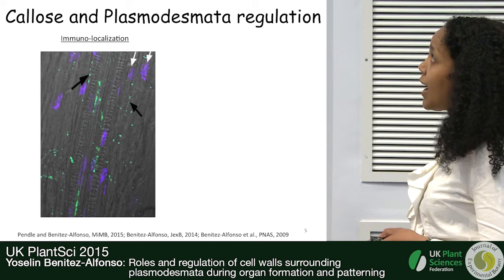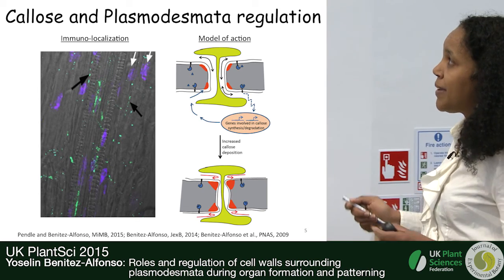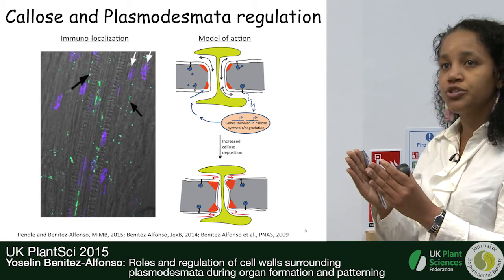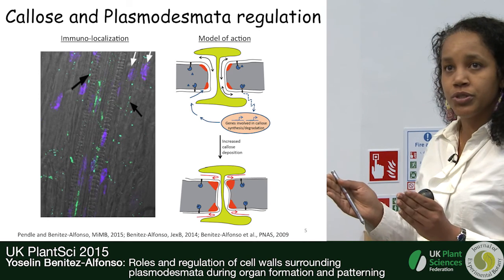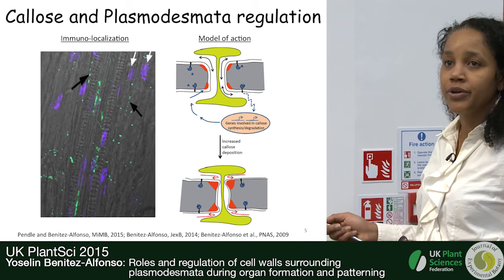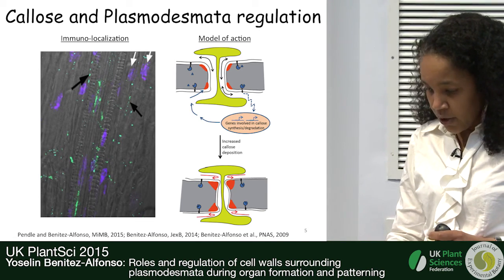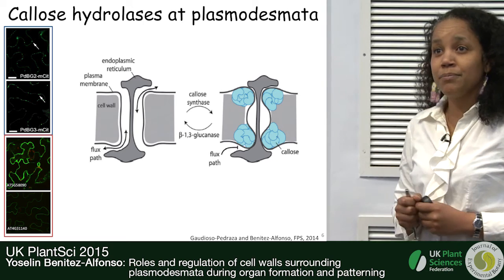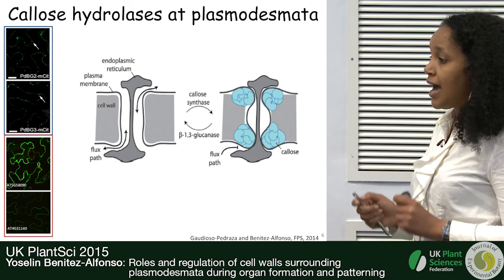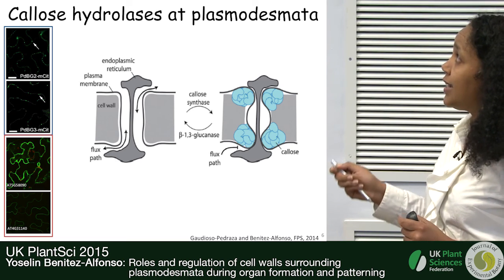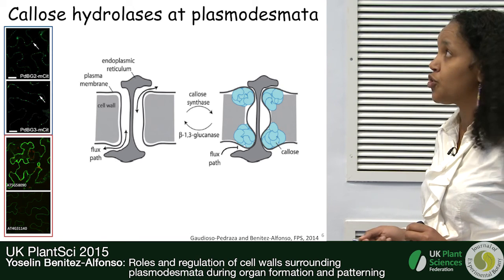So what is the model? How does callose control Plasmodesmata transport? Increased callose deposition provides physical constriction in the channel, so the cytoplasmic aperture is reduced and movement of molecules from one cell to another is basically restricted. We studied the mechanisms underlying this regulation of callose at Plasmodesmata sites by looking at the proteins that mediate callose synthesis and degradation.